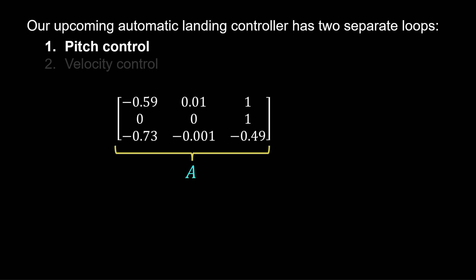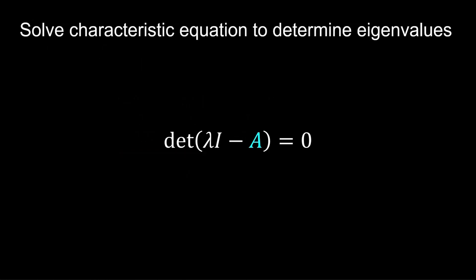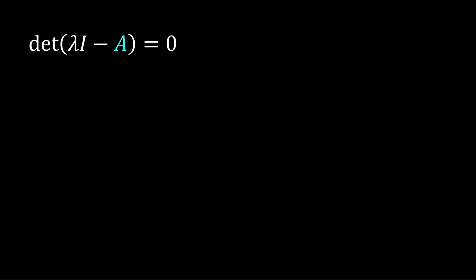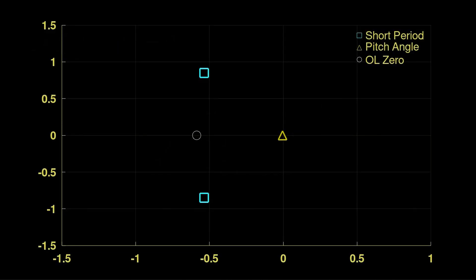Let's take a look at the modal characteristics of our system. Solving the characteristic equation, we get three eigenvalues, which we've annotated on this pole zero plot. We see the complex short period pair and the slow dominant pitch pole, along with the open loop zero.